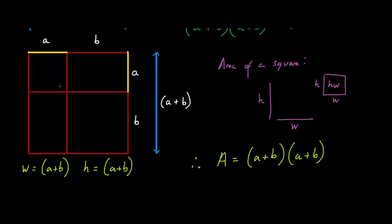Now let's look at the area of the squares and rectangles inside this perfect square individually. The area of this square over here — its width is a and its height is a, therefore its area is a squared. Now let's look at the area of this rectangle over here — we've got a width b and a height a, therefore the area of this rectangle is a times b. What is the area of this rectangle over here? Its width multiplied by height — once again, we've got ab. Finally, what is the area of this square over here? Its width b multiplied by height b, therefore the area of this square is b squared.